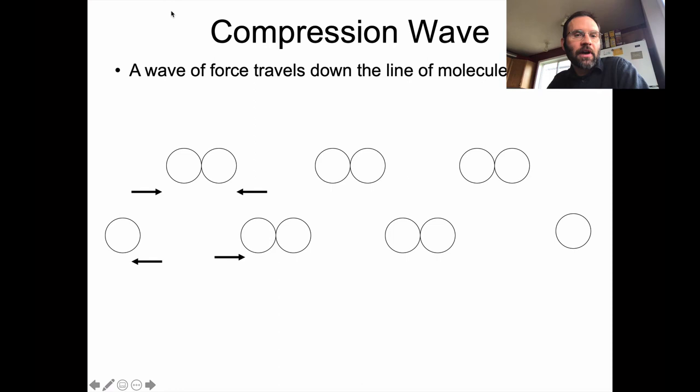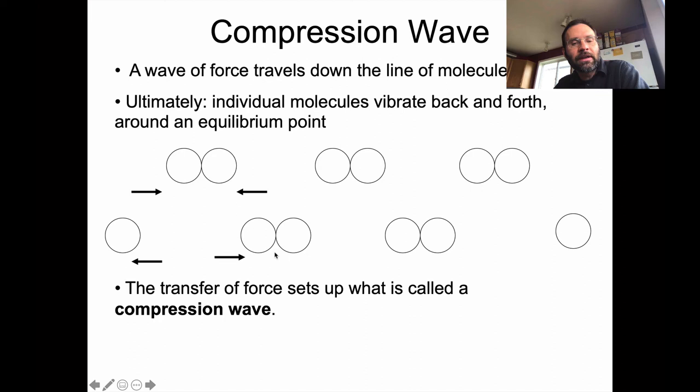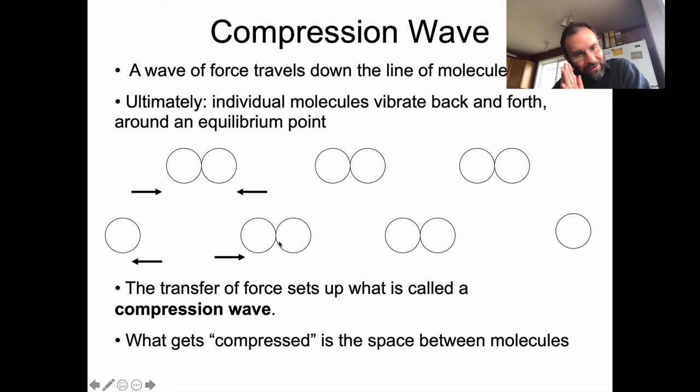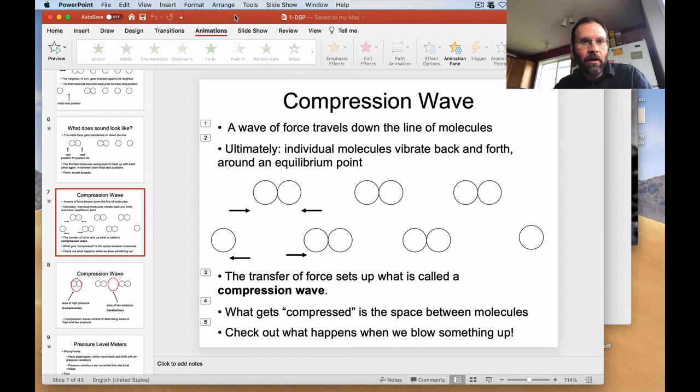The force travels through the individual molecules in the line. It doesn't push one molecule all the way from the beginning to the end of the line. When that happens, you get what is called a compression wave. You have individual molecules vibrating back and forth around some equilibrium point, and they set up a compression wave. What gets compressed here is the space between the molecules. This is what it looks like when you're pushing things together. There's lots of compression there. Alternately, things move apart and get what's called a rarefaction. I have some videos of things blowing up, so why don't we watch them? Because that's always fun.